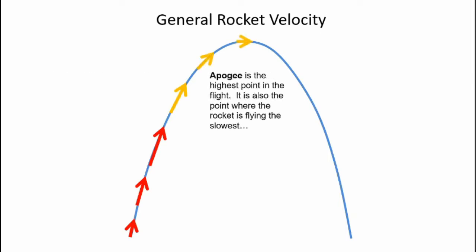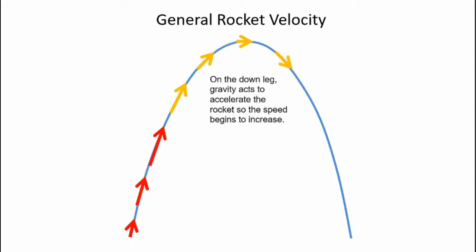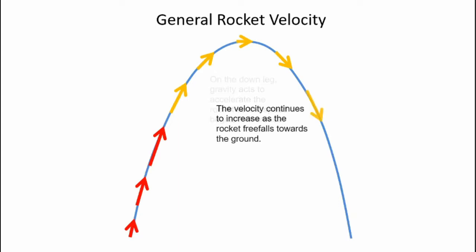Apogee, the highest point in the flight, is where velocity is at a minimum. There tends to always be some horizontal velocity, so the rocket never really stops moving. After apogee, gravity pulls the rocket back down towards the ground, increasing its speed.